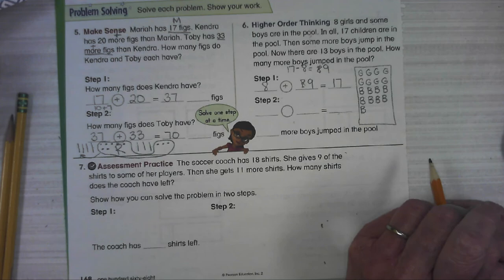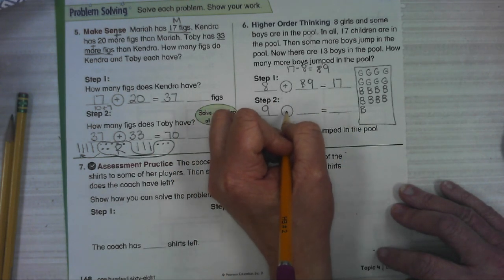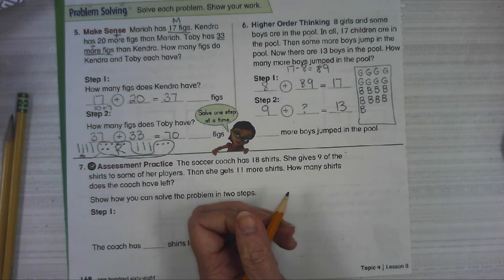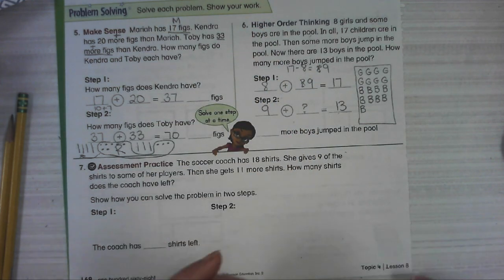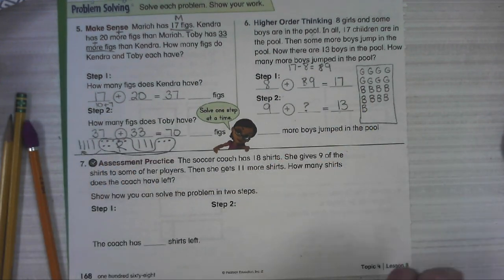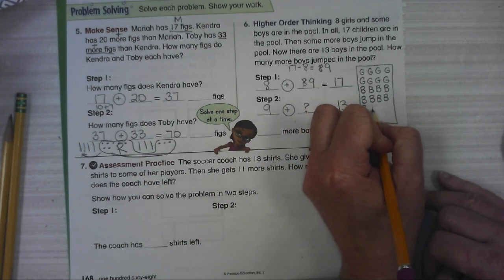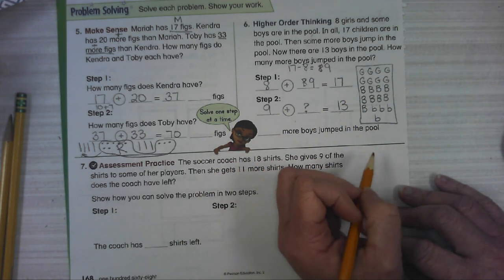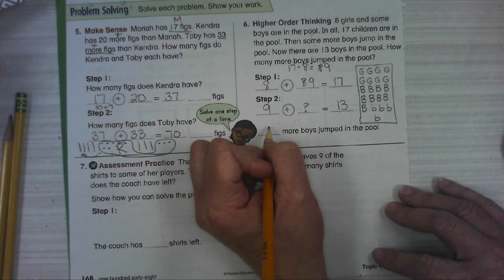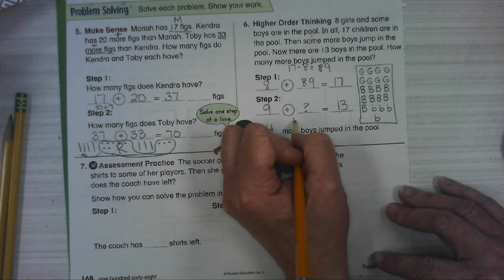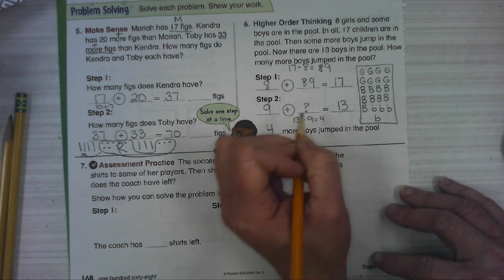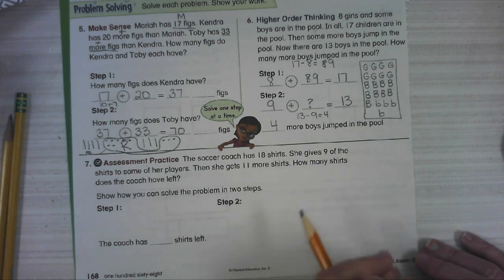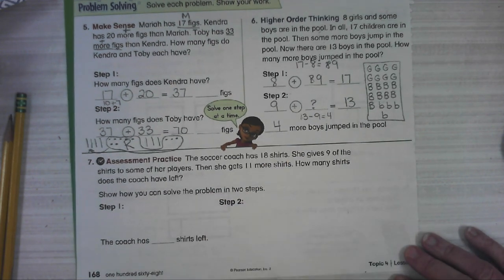Then some more boys jump in the pool. Now there are 13. So if we have nine and we get some more boys and we end up with 13, let's see how many more we need. So we're not going to count the girls right now. We're only counting boys. So we have nine. I'm going to use, how many more boys did we get? Four. You could also use the equation 13 minus nine equals four. Okay. This equation matches the story though. We had nine, we got some more that we don't know and ended up with 13. Four more boys jumped in the pool.